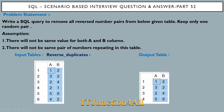We have been given a table called 'reverse_duplicates' with columns A and B, which has the values: 1,2 then 3,2 then 2,4 then 2,1 then 5,6 and 4,2.